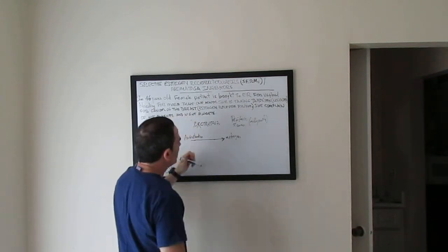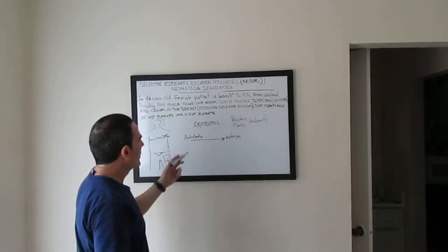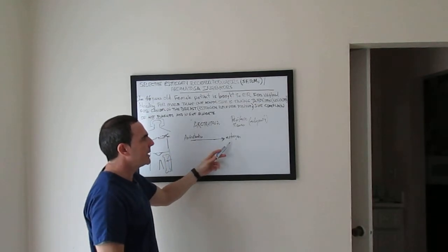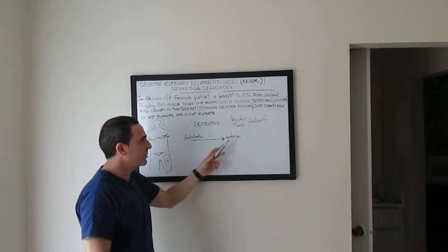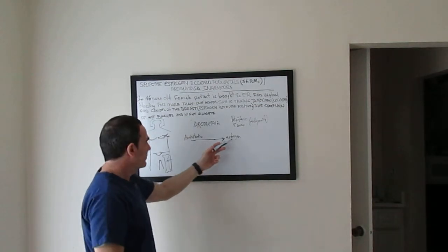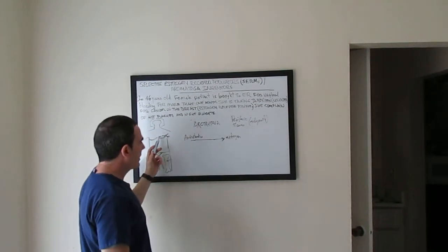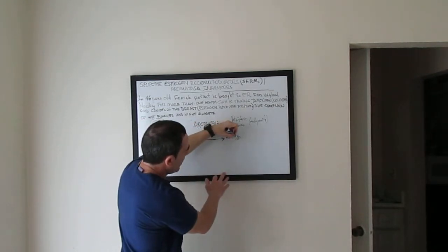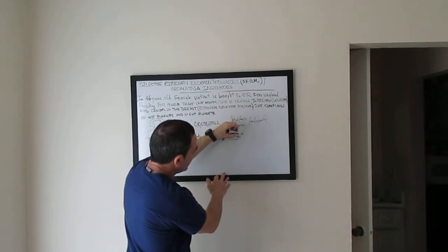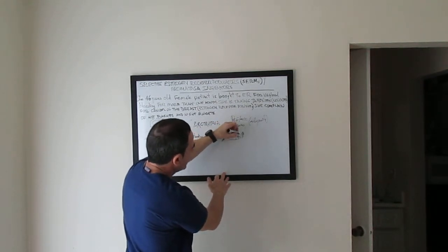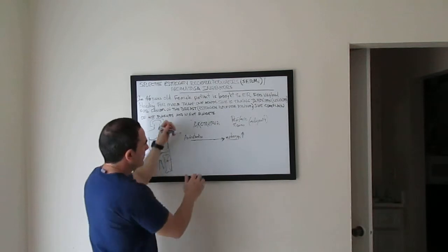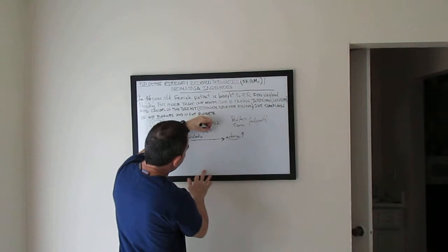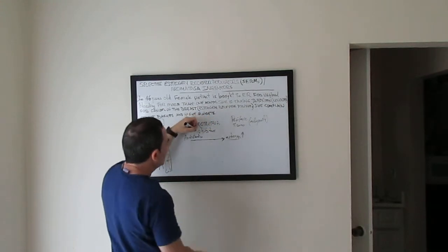This is important in menopausal women. Aromatase converts androstenedione to estrogen in peripheral tissue. Remember, estrogen is the problem when the person has breast cancer with receptor-positive status. Aromatase inhibitors block this action.